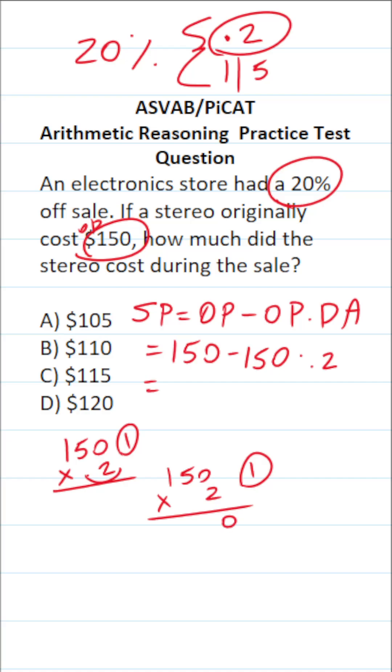0 times 2 is 0. 5 times 2 is 10. Carry the 1. 2 times 1 is 2, plus 1 is 3. Bring in our 1 decimal. So $150 times 0.2, as you can see, is $30.